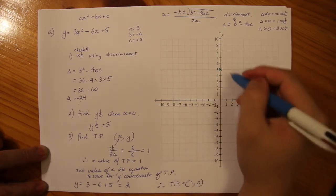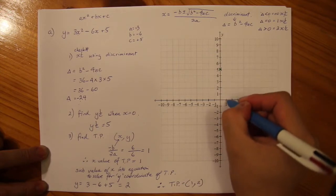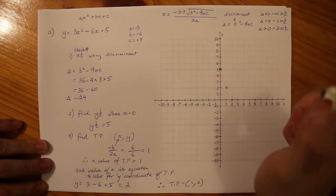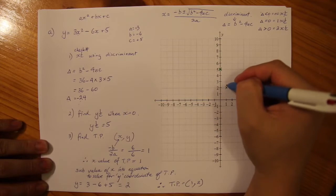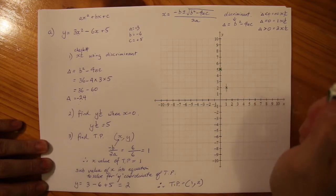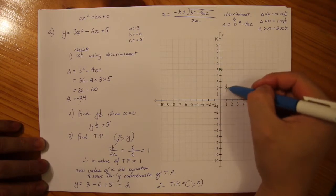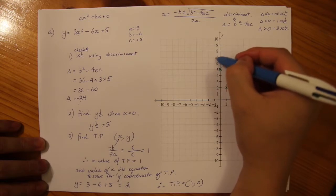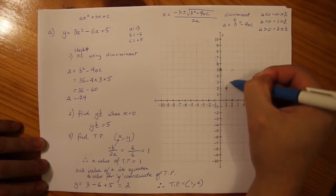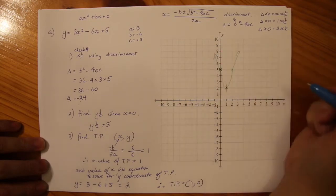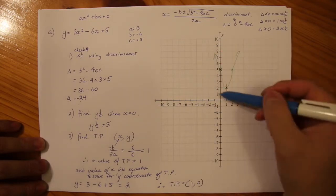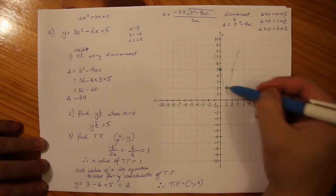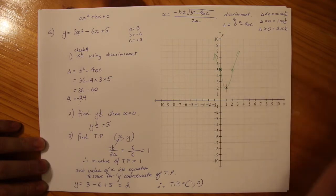Let's put that into our sketch. When X is 1, Y equals 2 — that's our turning point, and it gives us our axis of symmetry. We can see the parabola will cut across that point. Joining the dots: there are no X intercepts as we found from the discriminant, our Y intercept is 5, and our turning point is (1, 2). And there's our sketch.